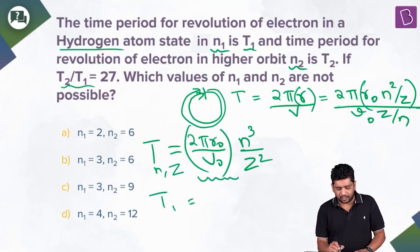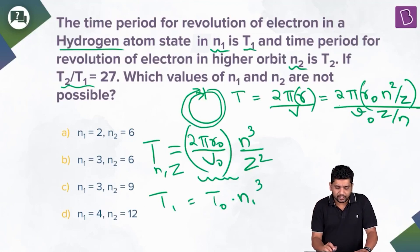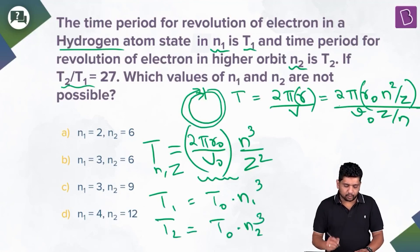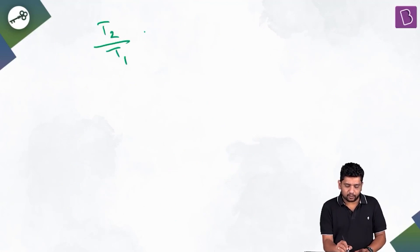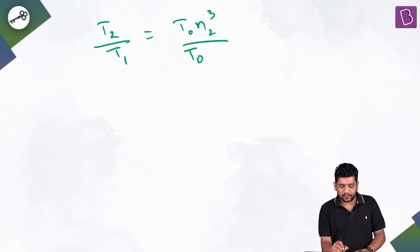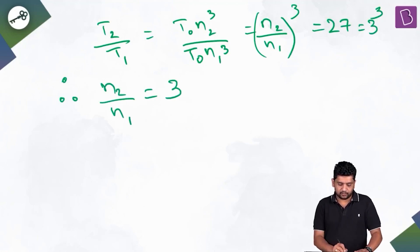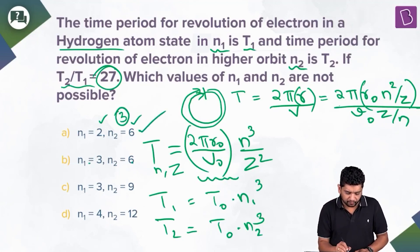For hydrogen, z = 1, so T = T₀ × n³, where T₀ = 2πr₀/v₀ is a constant. Therefore T₁ = T₀ × n₁³ and T₂ = T₀ × n₂³. Dividing, T₂/T₁ = (n₂/n₁)³ = 27 = 3³, so n₂/n₁ must equal 3.